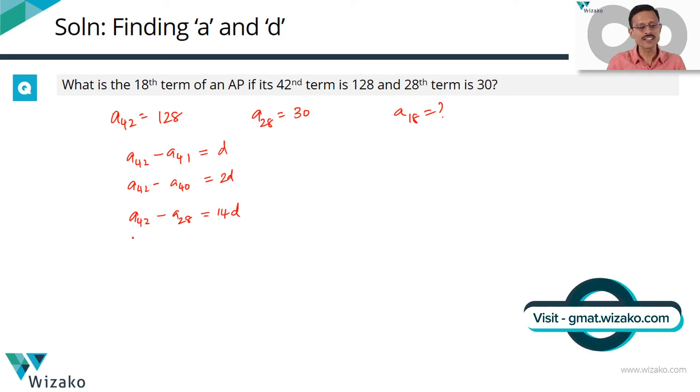How much is the 42nd term? The 42nd term is 128. What is the 28th term, which is equal to 30? This is equal to 14 common differences.